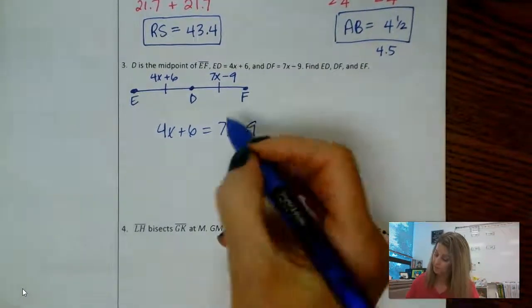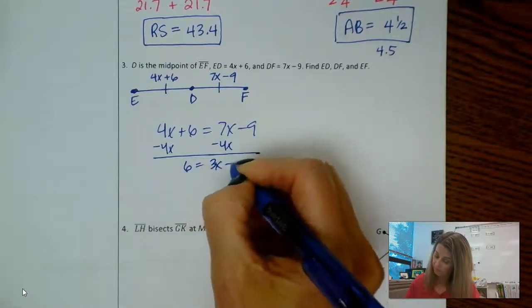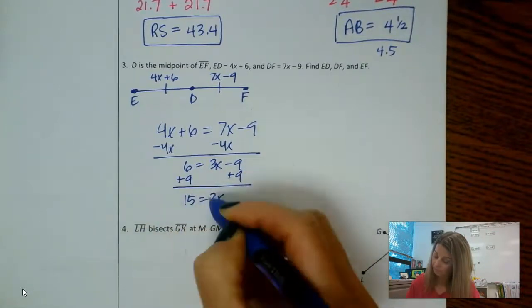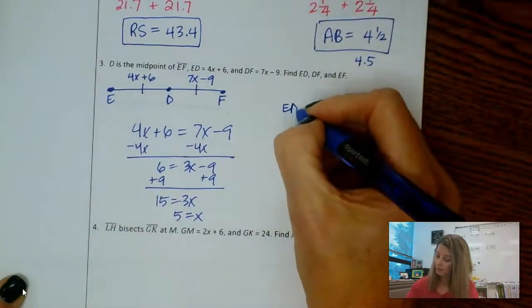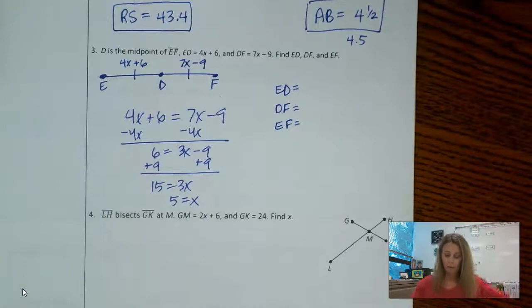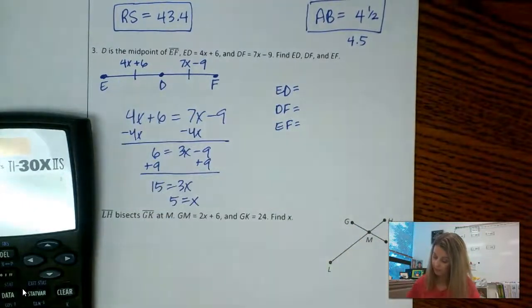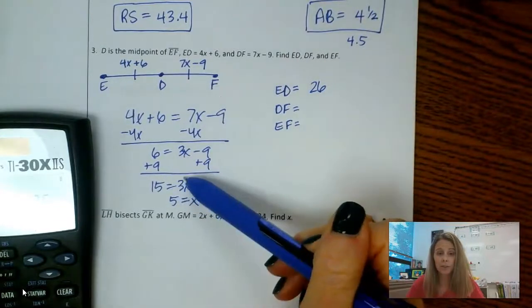So I have X equals 5. We need to find the length of ED, the length of DF, and the length of EF. All right, so I'm going to use my calculator here. Let's go ahead and substitute in. I'm going to take my 5. So ED is 4X plus 6, so I can do 4 times 5 plus 6, and I get 26.